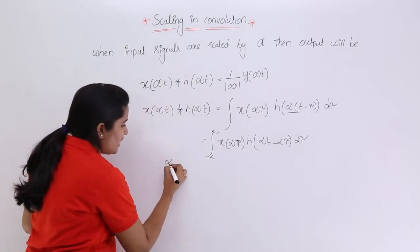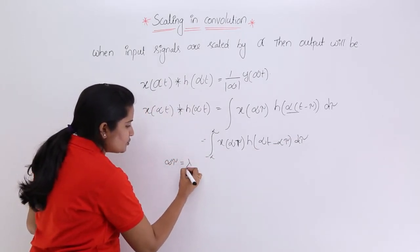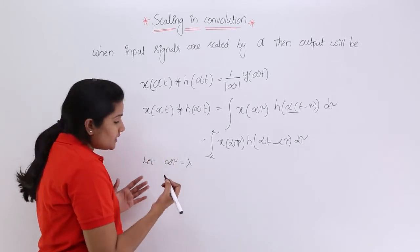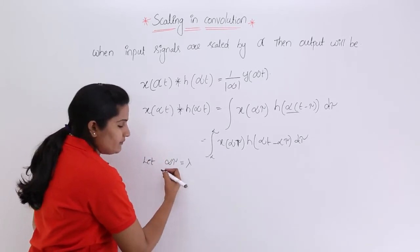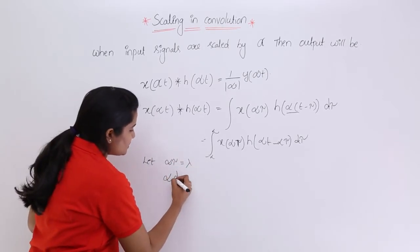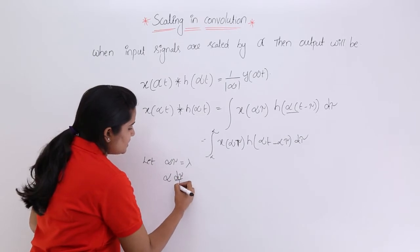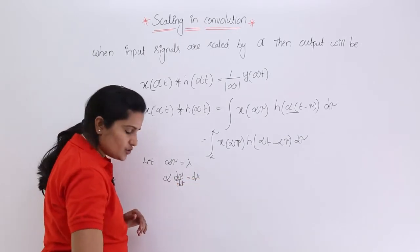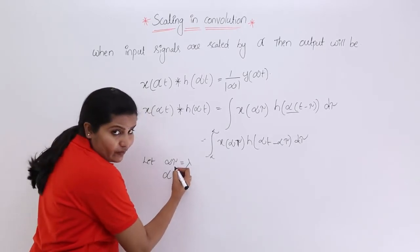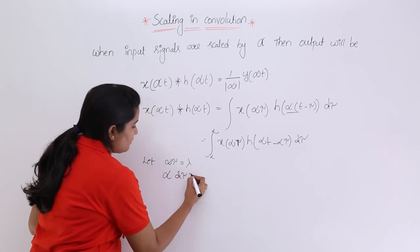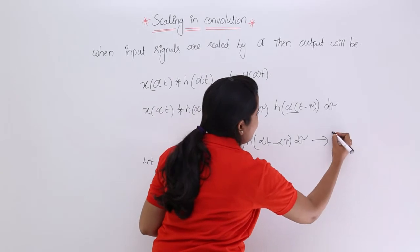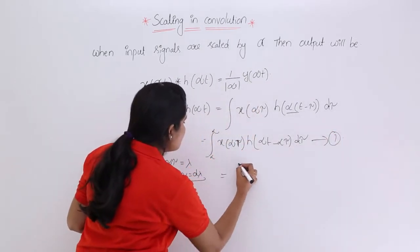Now I am substituting alpha·tau = lambda. Differentiating both sides, alpha·d·tau equals d·lambda, so d·tau equals d·lambda over alpha. Substituting these values into the equation, in place of alpha·tau I substitute lambda, and d·tau becomes d·lambda over alpha.